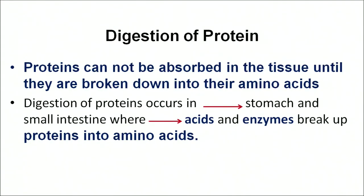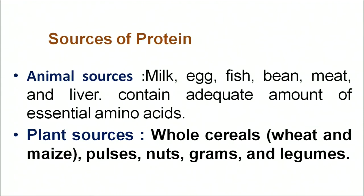The basic building blocks of proteins are amino acids. There are only 22 different amino acids found in the proteins of living organisms. These are divided into two categories: essential amino acids, which cannot be synthesized in the body and must be provided through diet; and non-essential amino acids, which can be synthesized in the body from carbohydrates and need not be supplied by diet. An example of an essential amino acid is leucine; a non-essential amino acid is alanine. Digestion of protein takes place when proteins are completely converted into amino acids. Protein sources include animal sources — milk, meat, egg, poultry — and plant sources such as whole cereal grains, pulses, legumes and nuts.